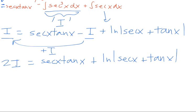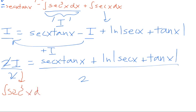And if we want to get rid of this factor of two, we just divide by two on both sides. And let's not forget that I we defined as the integral of secant cubed of x dx. So what do you know? We found the answer of secant cubed of x dx right here.